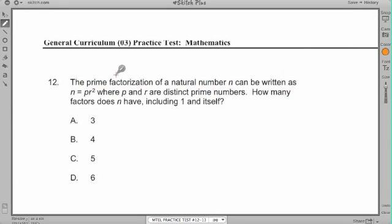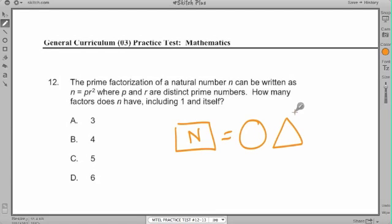All right. So we're given prime number, or a natural number. We don't know what this natural number is. And we're told it's made up of these two distinct prime numbers. I don't know what they are. One of them is squared. By the way, if it doesn't tell you what exponent it is, assume that it's 1. It's an implied 1. So I have p to the first times r to the second. I don't know what they are. And I'm supposed to find out what this natural number is so that I can figure out how many factors are in it.